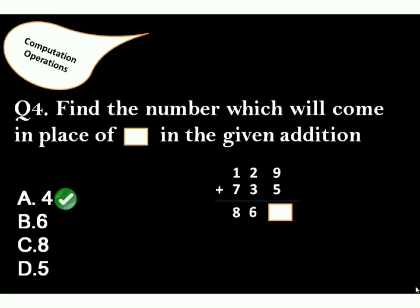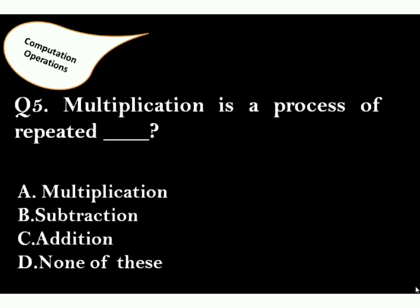Next question. Question 5: Multiplication is a process of repeated... The correct answer is option C.